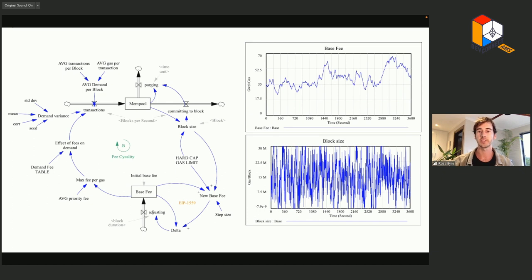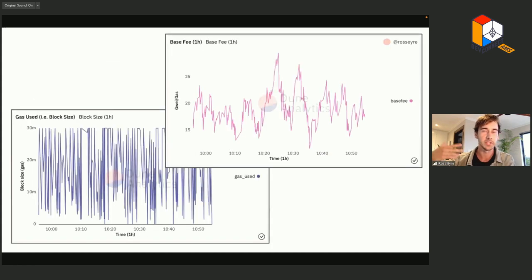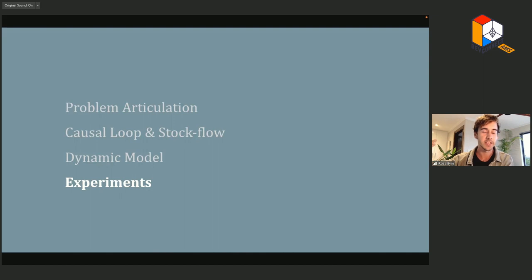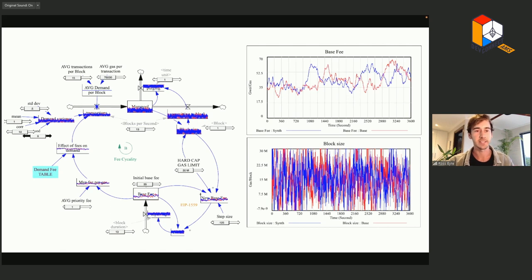Here's our conceptual model converted into a dynamic model — I've added charts showing the base fee and block size over 60 minutes. To create the dynamical model, we need to define each relationship in mathematical terms. Fortunately, with Ethereum's well-documented protocols, you don't have to do much guesswork on the mathematical specification. We'll also want to validate our model against historical data — and that's another advantage of working with blockchains. Once satisfied that the model is behaving as expected, we can run all kinds of experiments: parameter sweeps, Monte Carlo runs, and sensitivity analysis to generate insights.